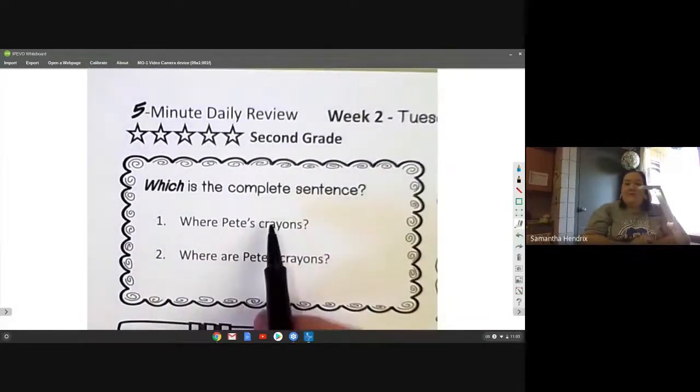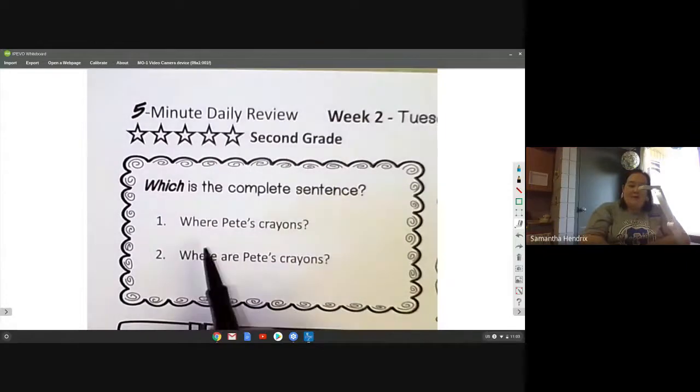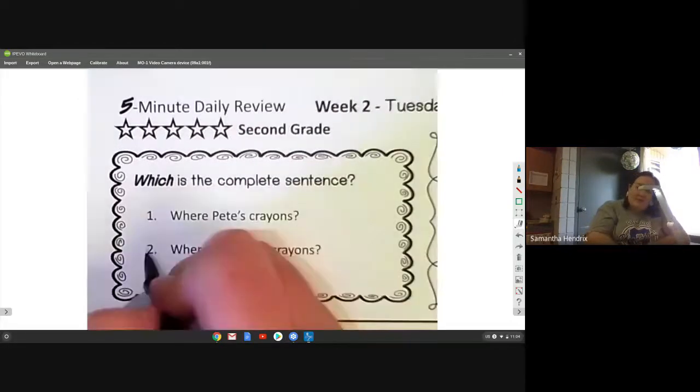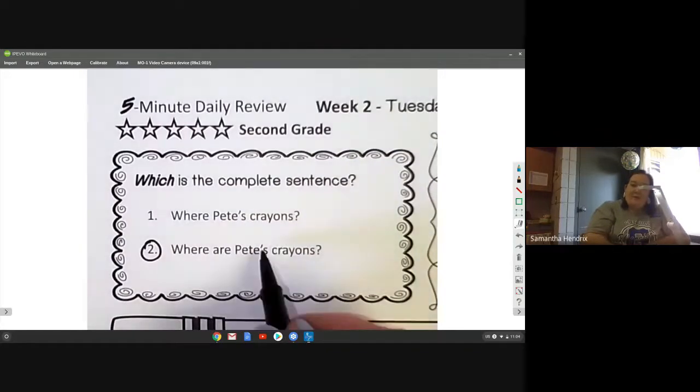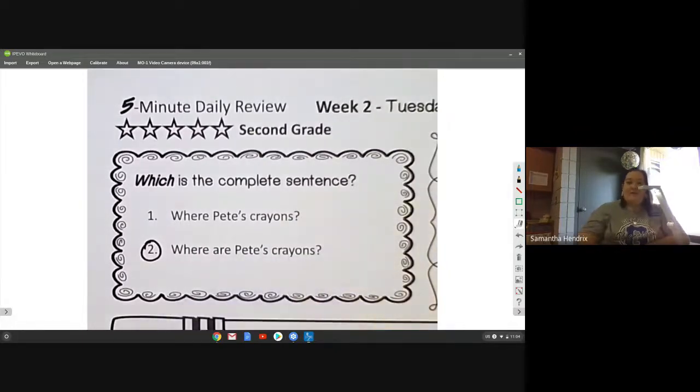Which is the complete sentence? Where Pete's crayons or where are Pete's crayons? You can hear which one makes more sense. Number two makes more sense: where are Pete's crayons. Remember this little apostrophe s, Pete's crayons, whose crayons? Pete's. So they belong to Pete.